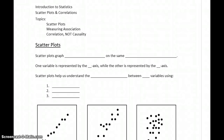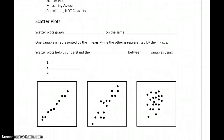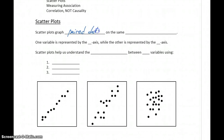In this section, we want to start talking about the relationship that exists, or if any relationship exists, between two variables. To start that conversation, we want to introduce a new type of graph called a scatterplot. Scatterplots are used to graph paired data or dependent data.